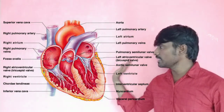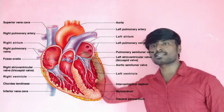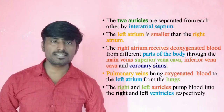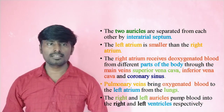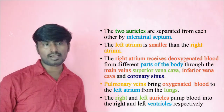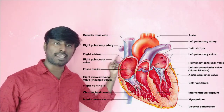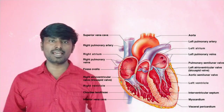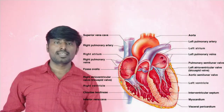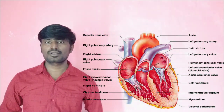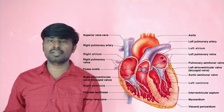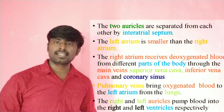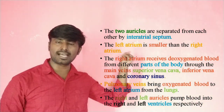The two atria are separated from each other by the inter-atrial septum. The left atrium is smaller than the right atrium. The right atrium is connected to different parts of the body through the main veins: superior vena cava, inferior vena cava, and pulmonary sinus.